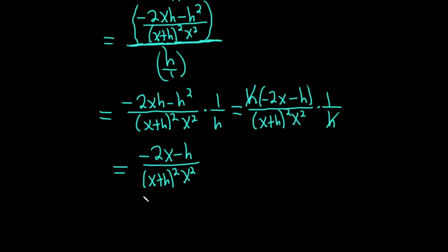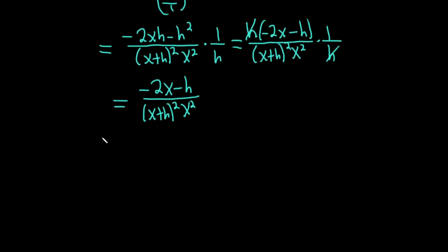So we get (-2x - h) / ((x+h)²·x²). Very nice. Okay. That's where we're at currently. So now we have to take the limit, right? So let's formalize this.